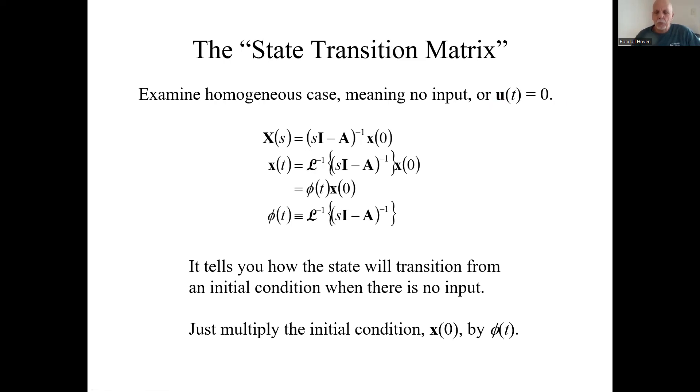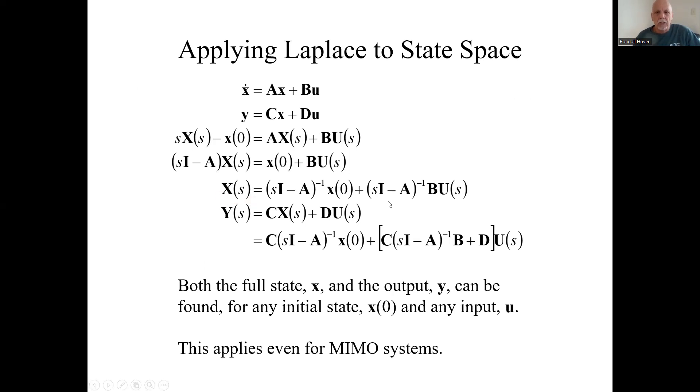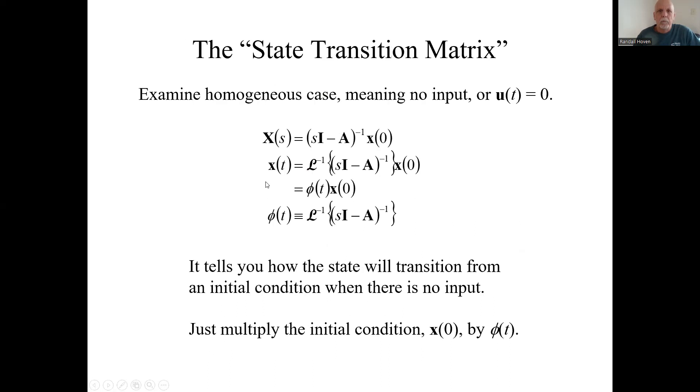If I set that input to zero, let's go back. Let's look at this state and set the input to zero. That means this u is zero, and I'm just left with this part. Well, the actual state is the inverse Laplace transform of that. x of zero is a constant, so you can pull that out. We call that the state transition matrix. The state transition matrix is the inverse Laplace transform of this thing, the inverse of sI minus A. What does it do? It tells you how the state will transition from any initial condition when the input is zero. You just multiply that initial condition by that state transition matrix.